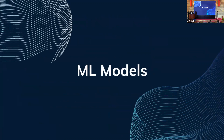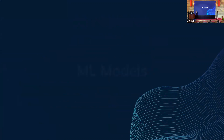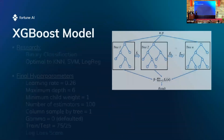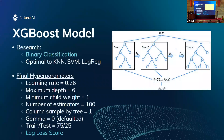For our machine learning models, we planned on using XGBoost because, according to research, it was a top model for binary classification — better than KNNs, SVMs, and logistic regression. These were the final hyperparameters we used.